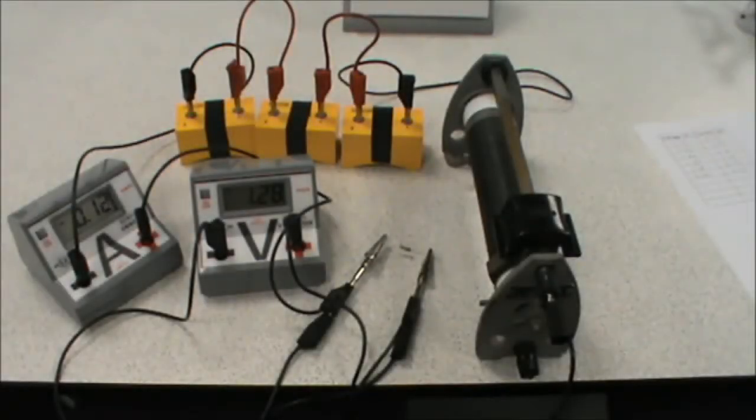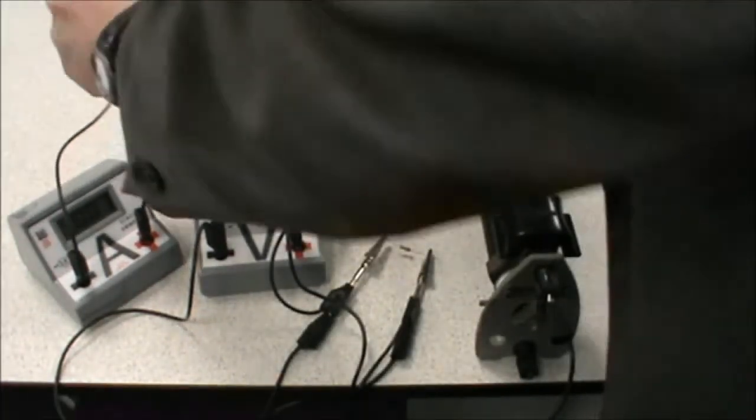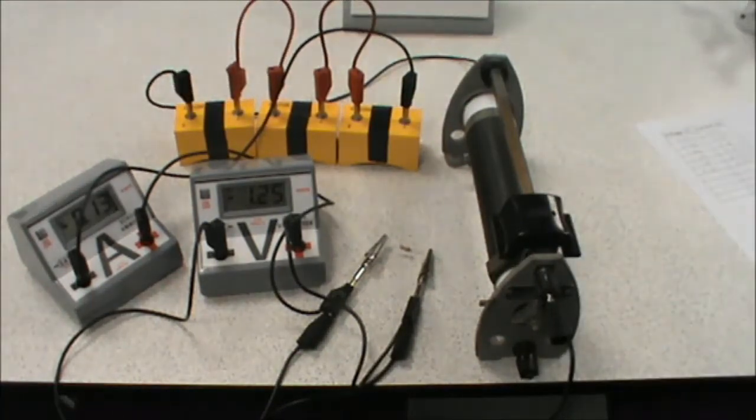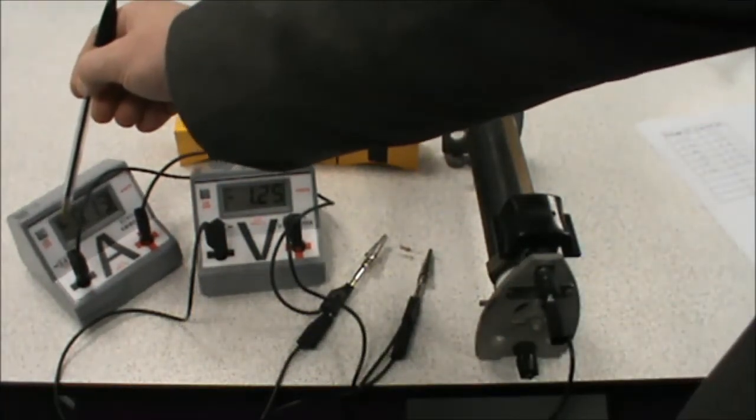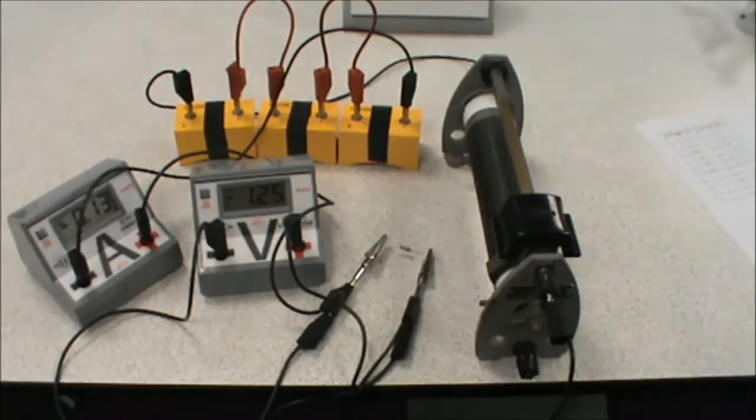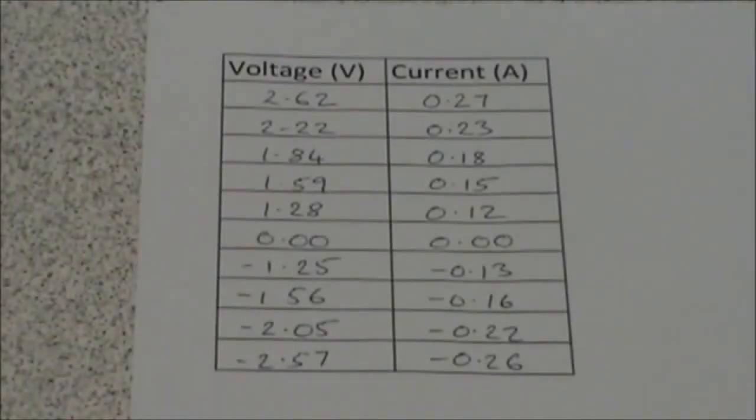In order to get negative values of voltage and current, what we need to do is swap the orientation of the cells so that they're driving the current the other way around the circuit. And now as you can see we have a negative on our ammeter and on our voltmeter, so we can take further readings. And there we have a full set of data which now allows us to plot our results on a graph.